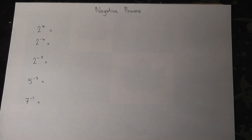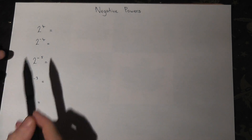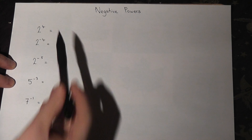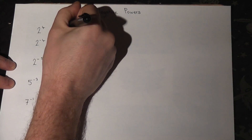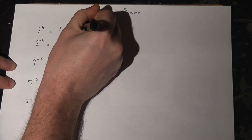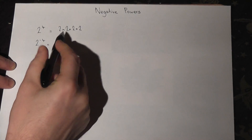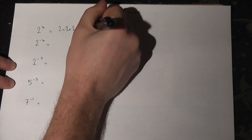Now negative powers always look really confusing, but actually, if you learn the golden rule, they're really simple. Now as a recap, if you have 2 to the power of 4, that just means 2 times 2 times 2 times 2, which gives us 2, 4, 8, 16.